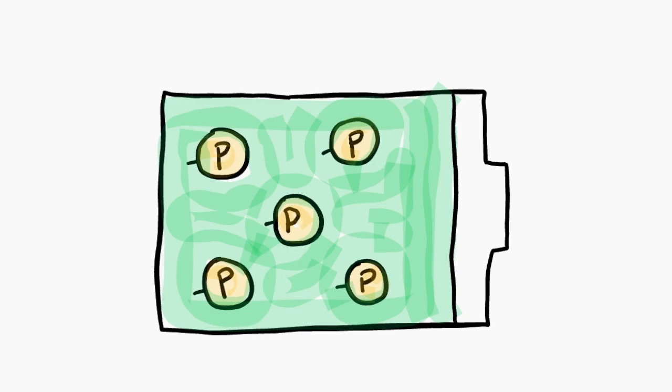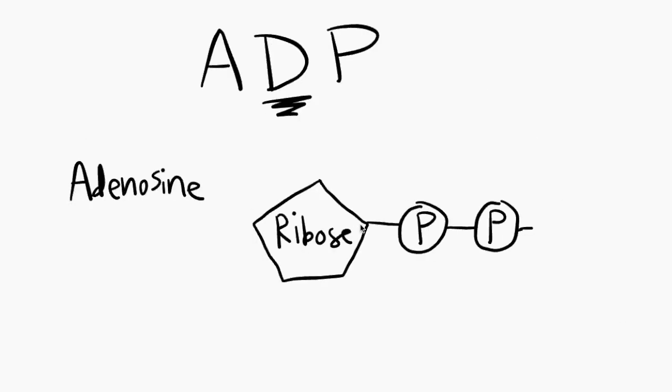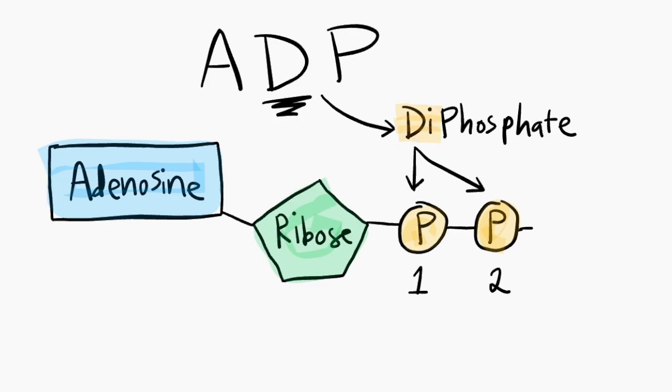An ATP without one of its phosphate groups is called an ADP, also known as adenosine diphosphate for two phosphates. But it can always regain that phosphate group and become ATP again, which makes it in a sense like a rechargeable battery.